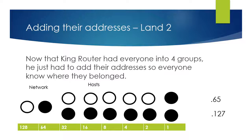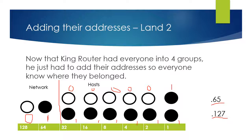Next we'll look at LAN 2. Here we have the protectors of 0 and 1. Our protectors are our network, and our hosts are our villagers. Adding 64 + 1 gives us 65 for the starting address. Adding 64 + 32 + 16 + 8 + 4 + 2 + 1 gives us 127 for the end. So the address range in LAN 2 is .65 to .127.